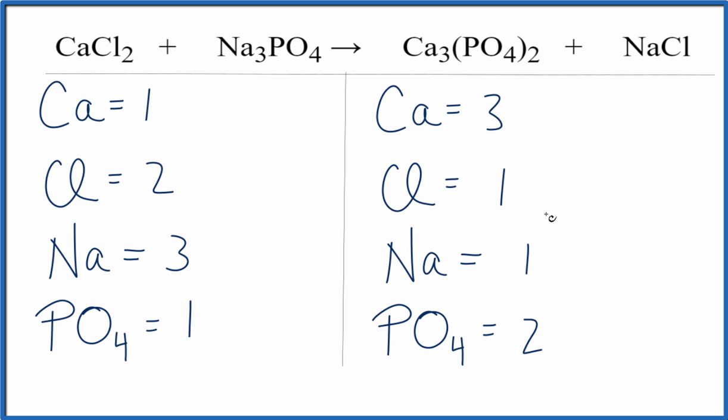So it looks like we could try to just balance the calciums first. Why don't we put a coefficient of three, so we have the one calcium times the three, that'll give us three calcium, those are balanced, and then two times three, we have six chlorine atoms.